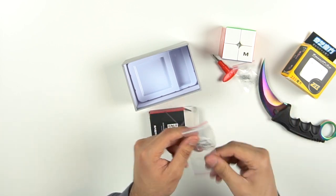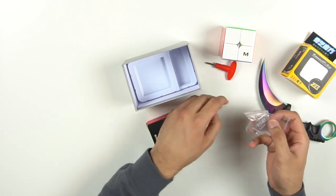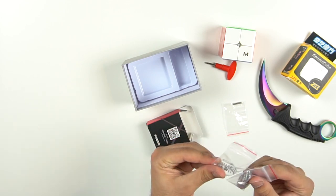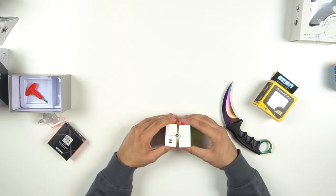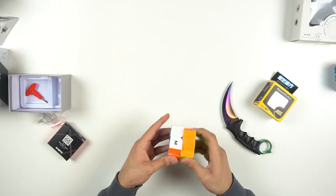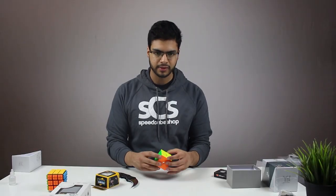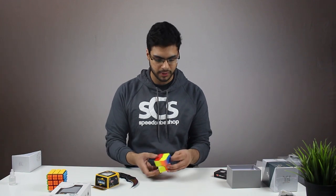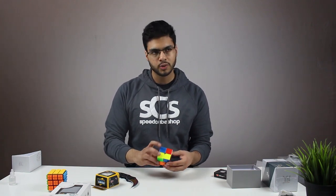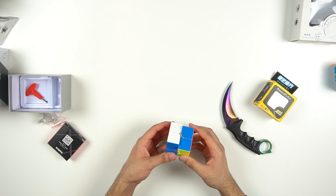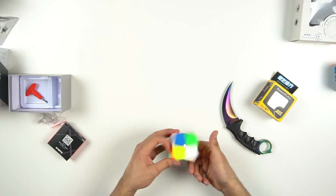Oh, also we have magnets, spare magnets. I'm guessing these are different spring strengths. Alright, here it is, the YJ MGC Elite 2x2. Is it the Elite? I'm just gonna call it the Elite. The turning is quite nice, it's very smooth and it's got a slight butteriness to it. But it's not super buttery, so yeah overall, pretty cool 2x2.